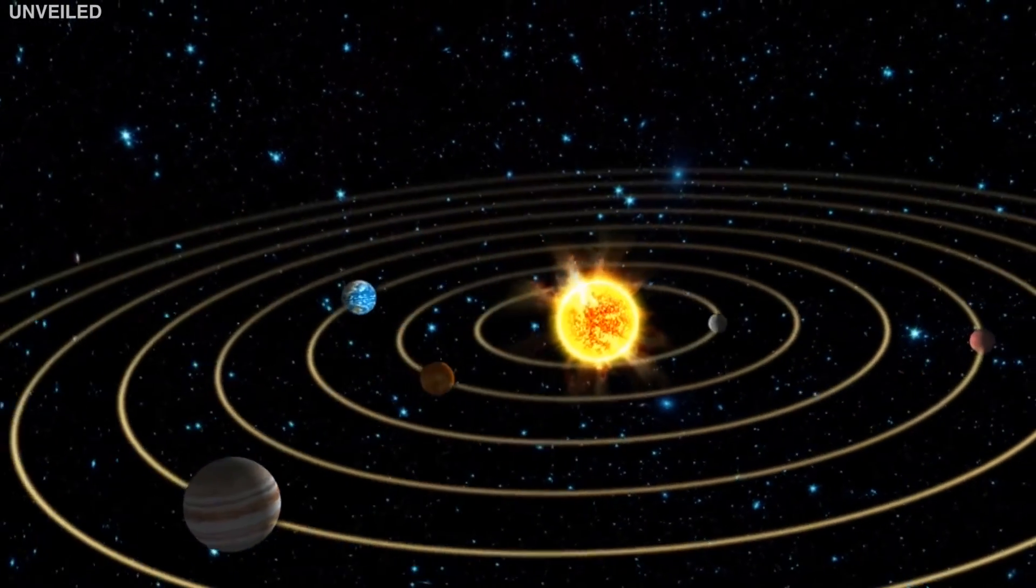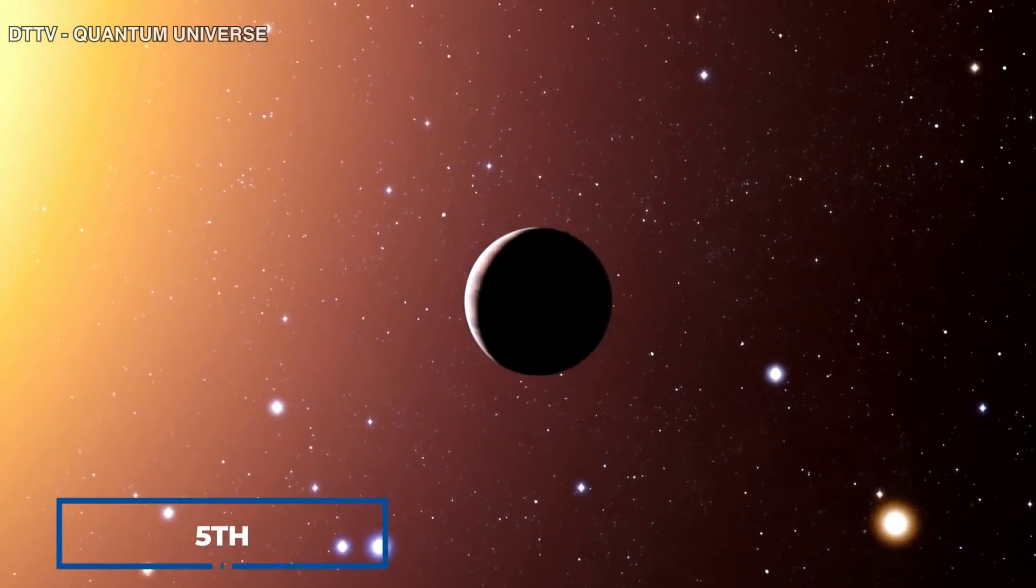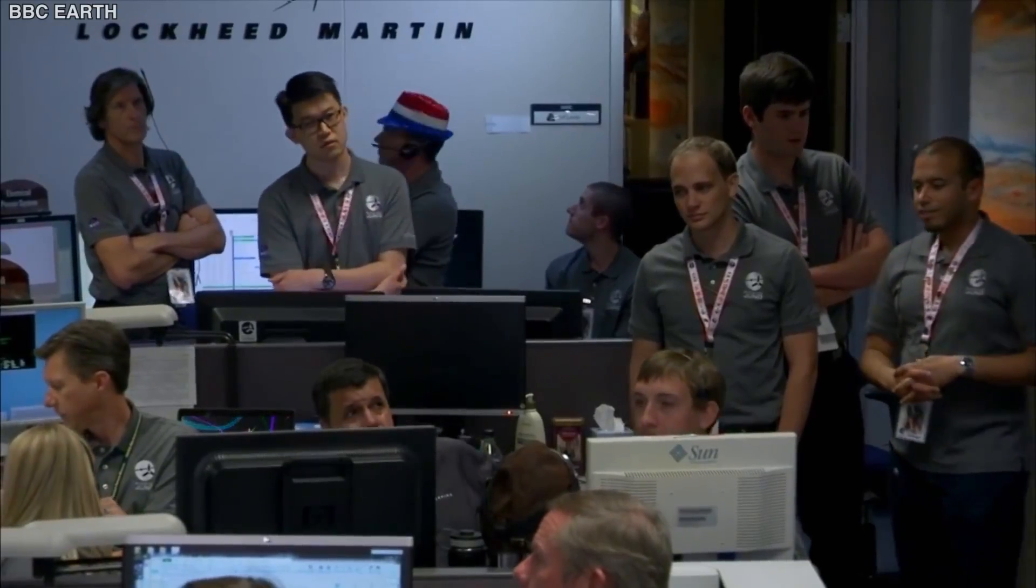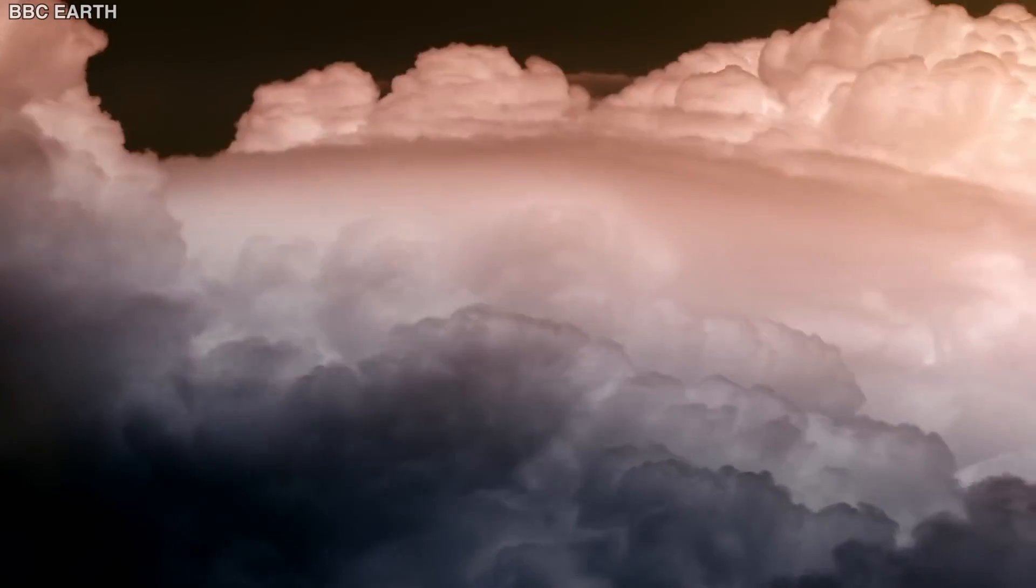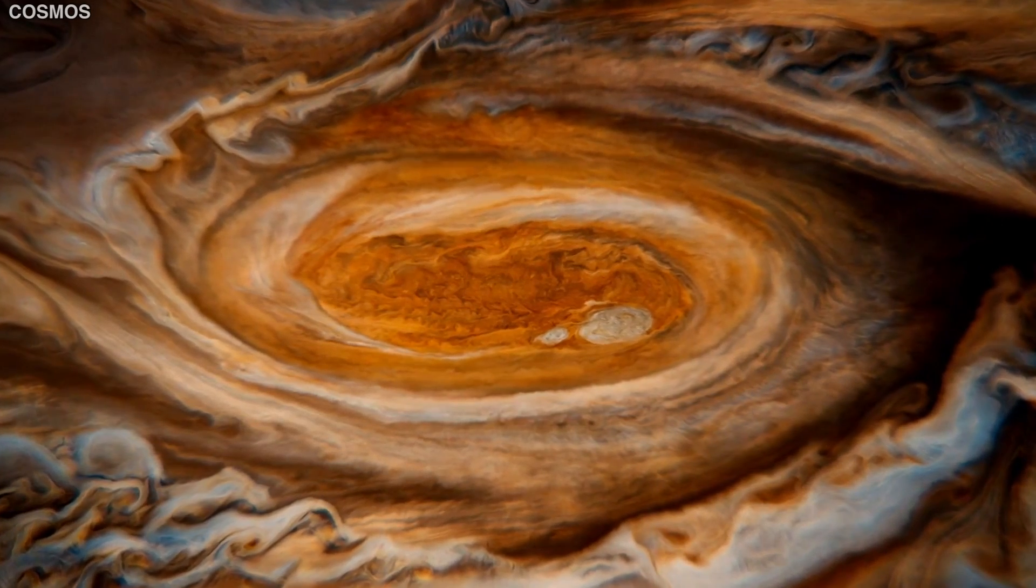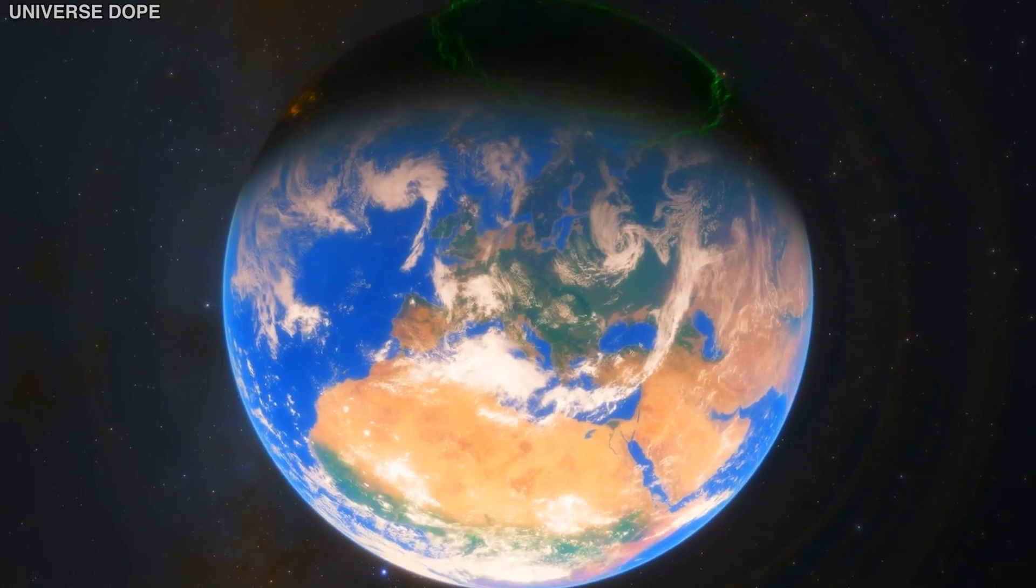Jupiter is the biggest planet in the solar system and the fifth planet from the sun, and the gas giant has a lengthy history of surprising astronomers. This stormy region is covered with bright clouds and named for the king of gods in Roman mythology. The great red spot, the largest and most known storm, is twice as broad as Earth.